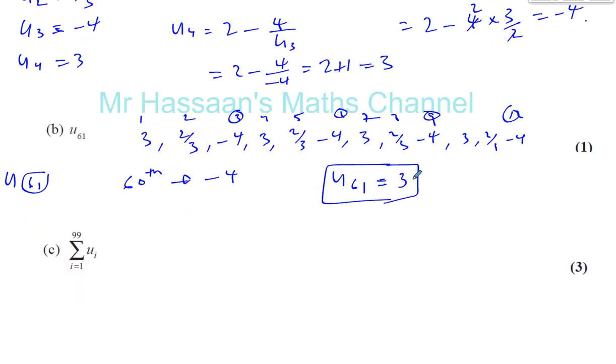Now it says, find the sum of the first 99 terms, 1 to 99. So add up all the numbers. You're going to have 3 plus 2 thirds minus 4, plus 3 plus 2 thirds minus 4, plus 3 plus 2 thirds minus 4, so on and so on. You're going to have it until you get to the 99th term.